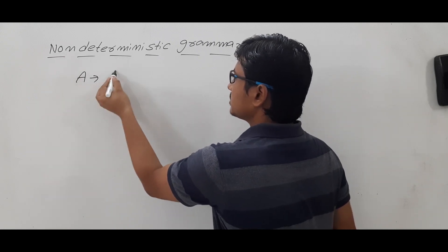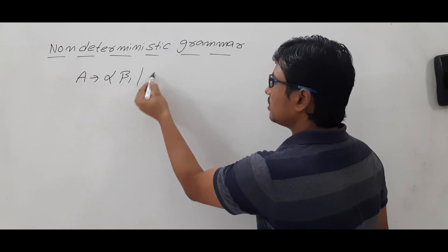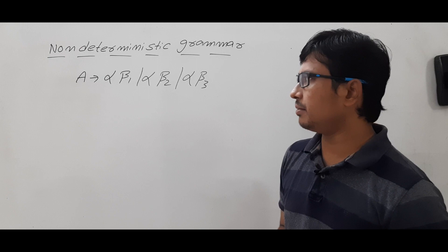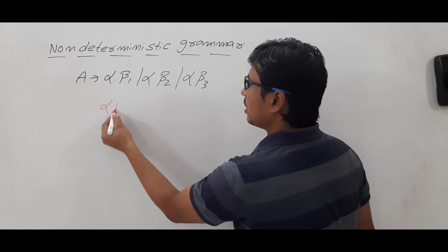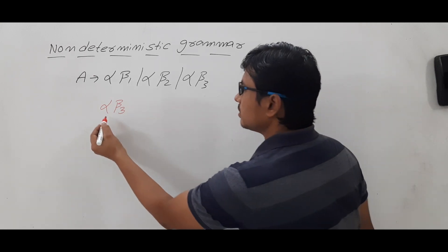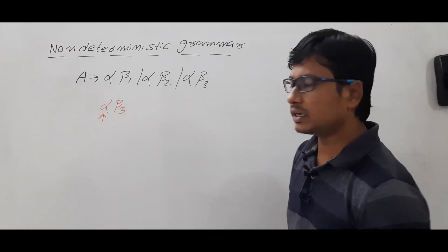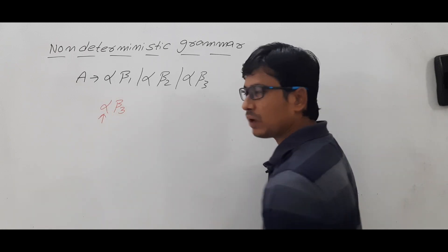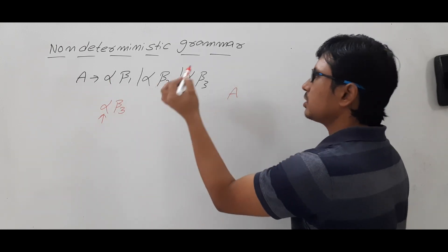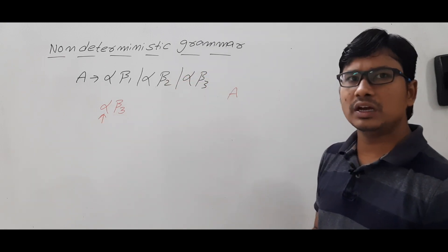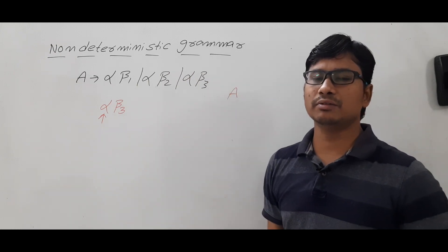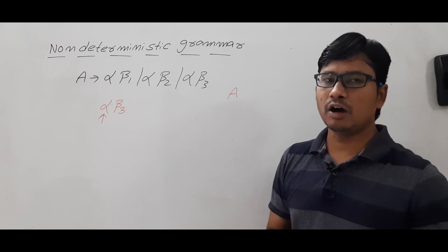Let me discuss the non-deterministic grammar with an example. A determines αβ1, or αβ2, or αβ3. I call this a non-deterministic grammar. Let's say I want to generate a string called αβ3. Now, how will the parsing algorithm work? Whenever you look at any parsing algorithm, it can read only the current input because you have an input pointer reading the current value. The start symbol is A, so you can use any of these productions. As human beings we can read all the characters and say to use the αβ3 production, but a computer always works with an algorithm.